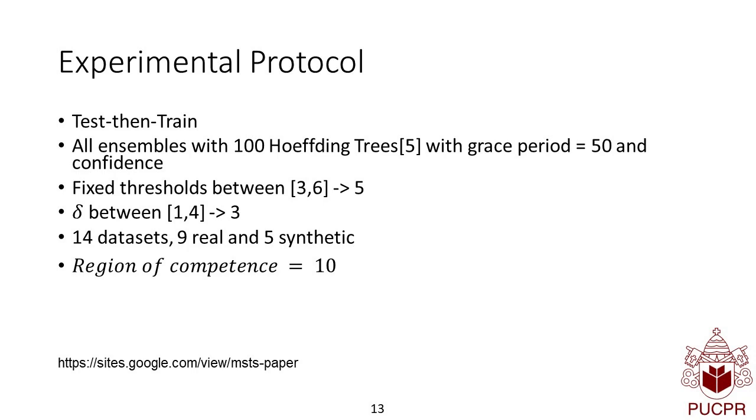All the ensembles that we tested had 100 Hoeffding trees with grace period 50. Hoeffding trees are a state-of-the-art tree method in stream learning.